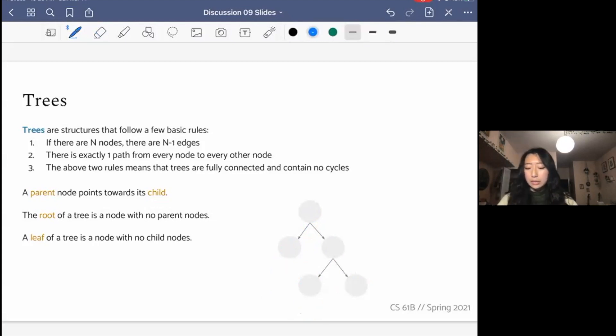Finally, the above two rules together mean that trees are fully connected and contain no cycles. So to get from A to B, if there was another path, that would create a cycle, and so that's not allowed, which means trees have no cycles, and fully connectedness just means that I can get from A to any other node.